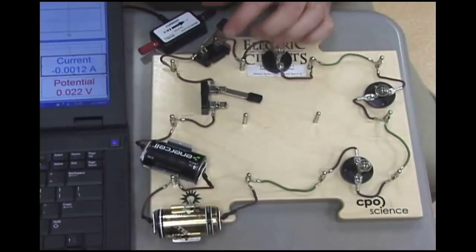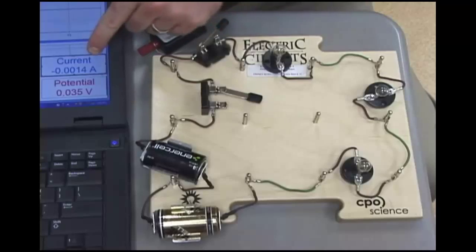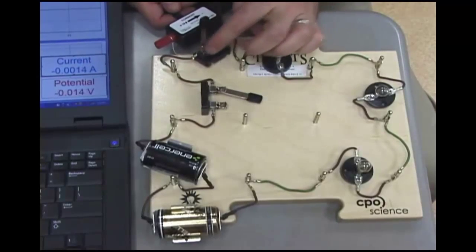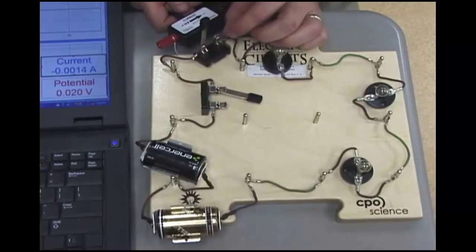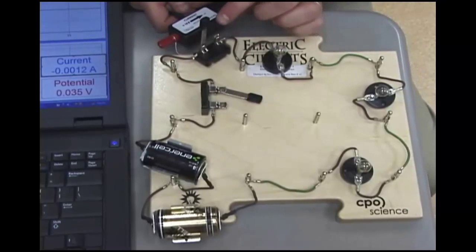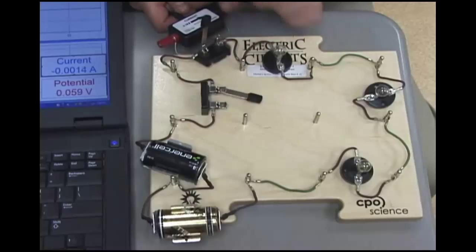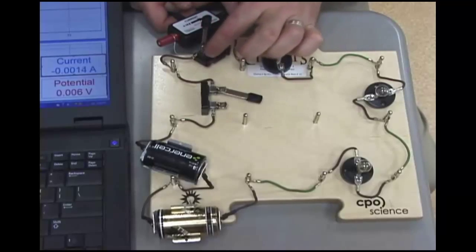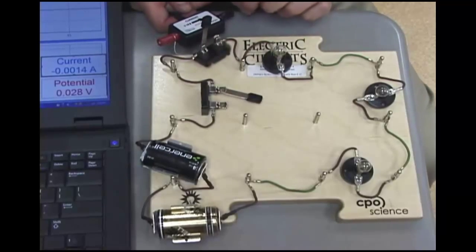Now, I've set the logger pro to capture current as well, and the current is measured by this box, which I've attached to a switch. Normally, I make my students jump up and down. They know that they have to open the circuit in order to measure current. Well, this is a convenient way for me to do that. So, wherever I put this switch is where I'm going to be measuring the current.